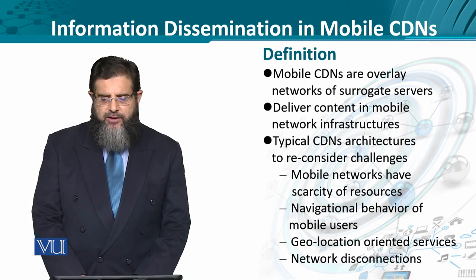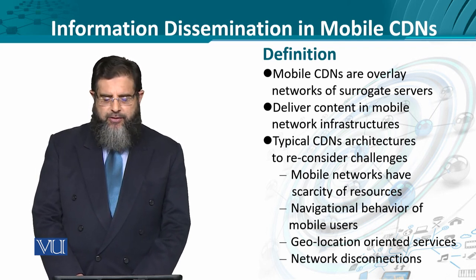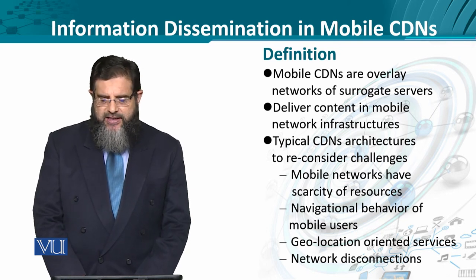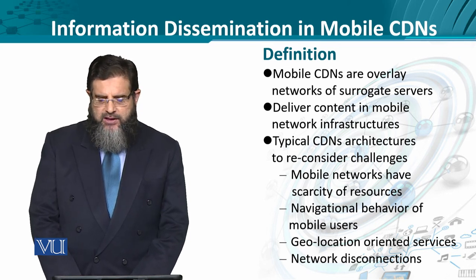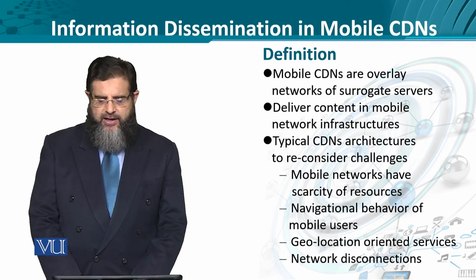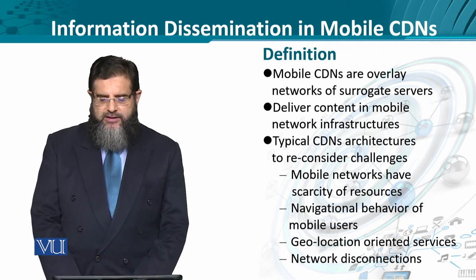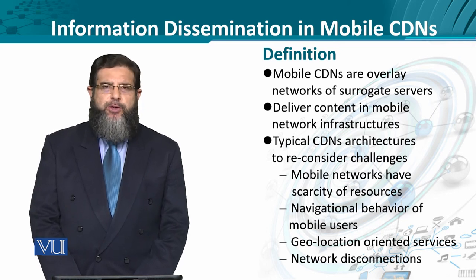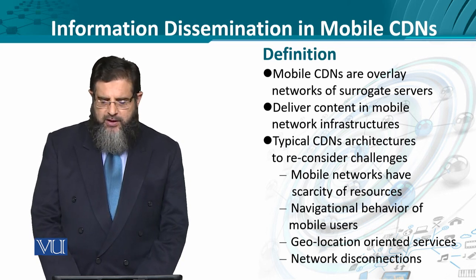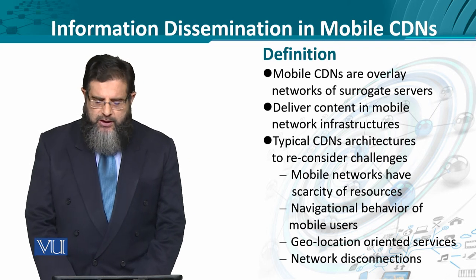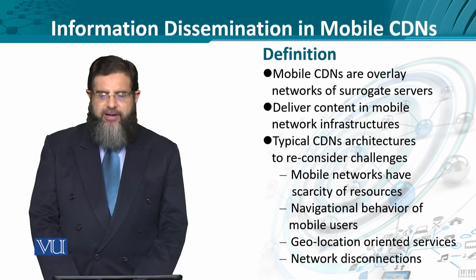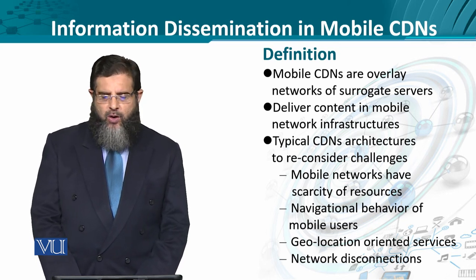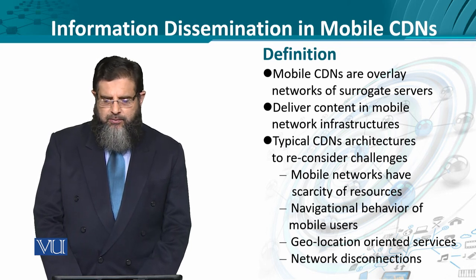These surrogate servers deliver the content in mobile network infrastructure, hence the name. Typical CDN architectures have to take into account some mobility-specific requirements. Mobile networks have scarcity of resources — compare a mobile phone with a laptop or a desktop. The users are on the move, meaning some kind of ambulatory behavior of users is a limiting factor in the smooth provisioning of services in mobile environments.